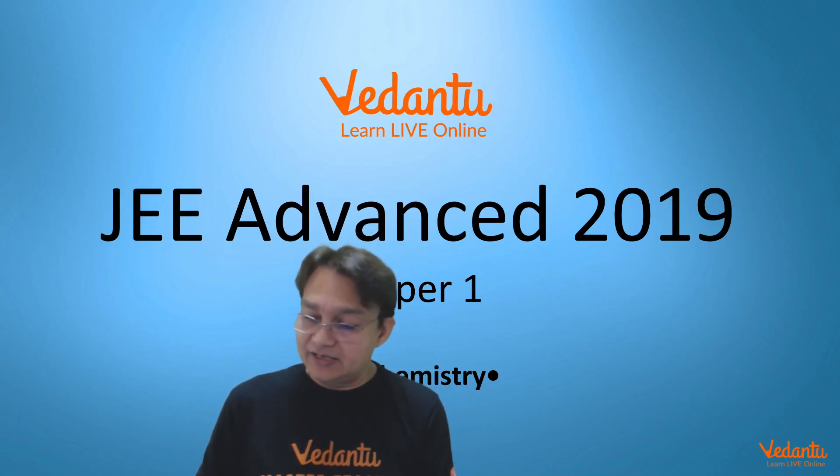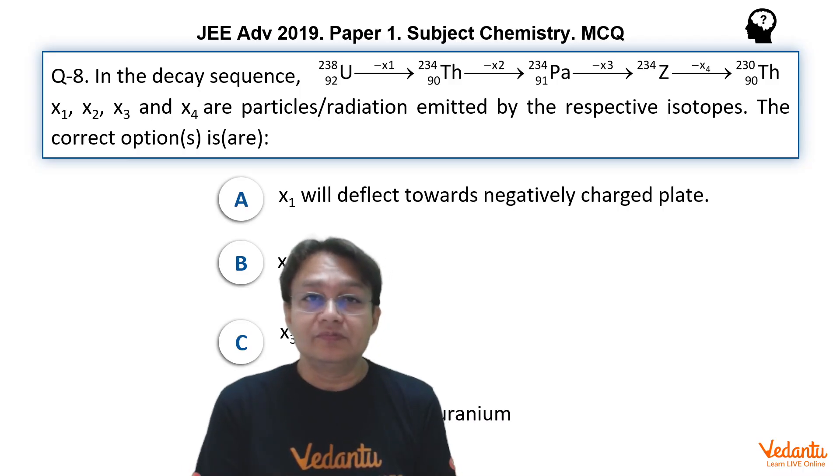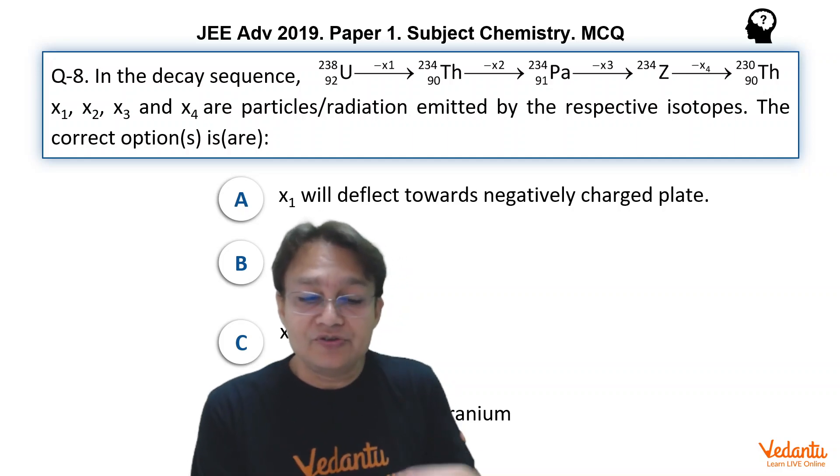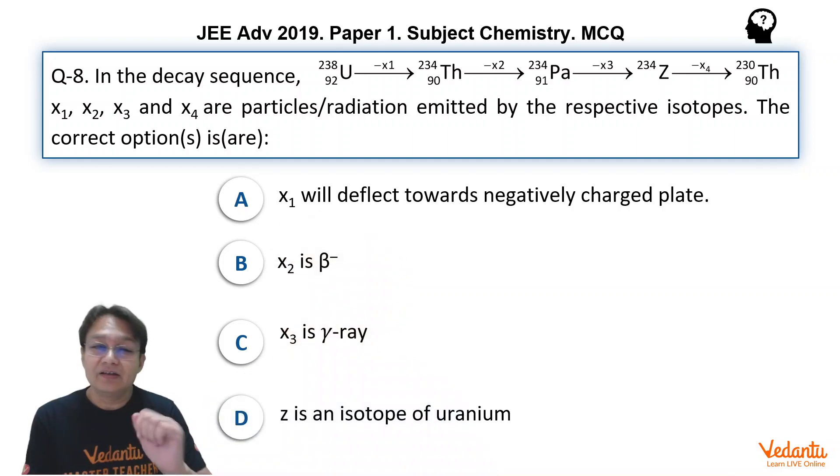This problem is question number eight. In the decay sequence, 238-92 Uranium minus X1 gives 234-90 Thorium. Thorium is changing into 234-91 Protactinium, and then Protactinium is changing into Z with mass number 234, and then Z is changing into 230-90 Thorium. Where X1, X2, X3, X4 are the particles or radiation emitted by the respective isotopes, and based on this we have to answer some questions.